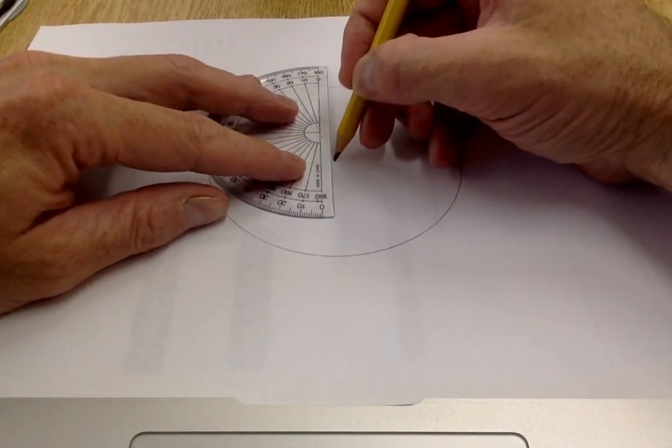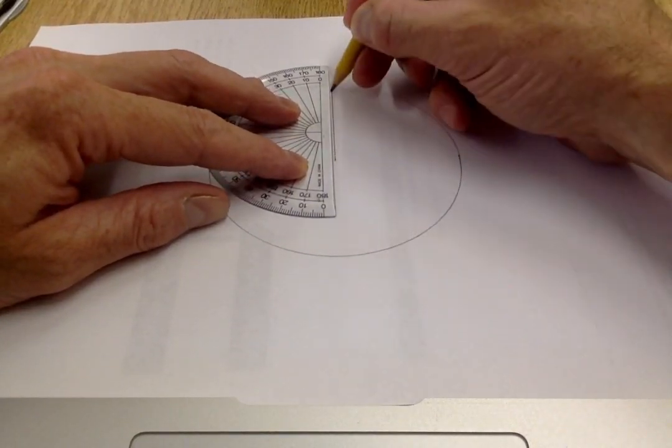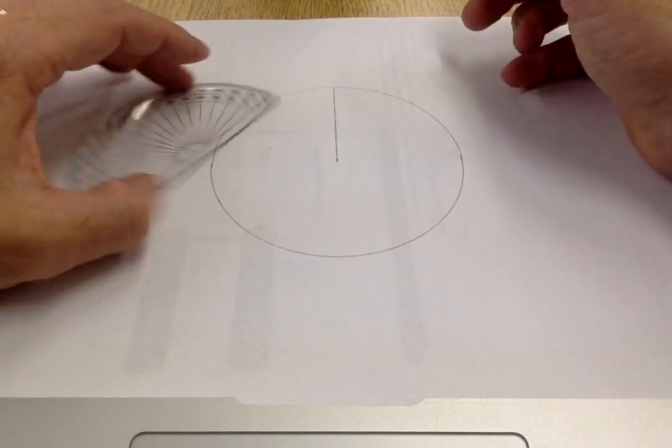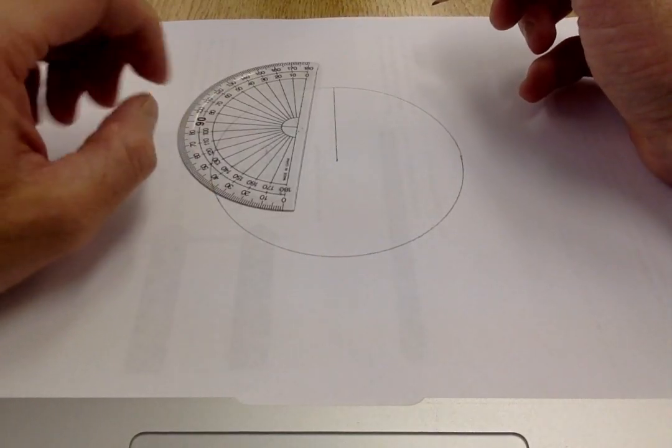If I am doing lines and the like, it's great to start off with a straight line, so I just use the base of my protractor to do that.